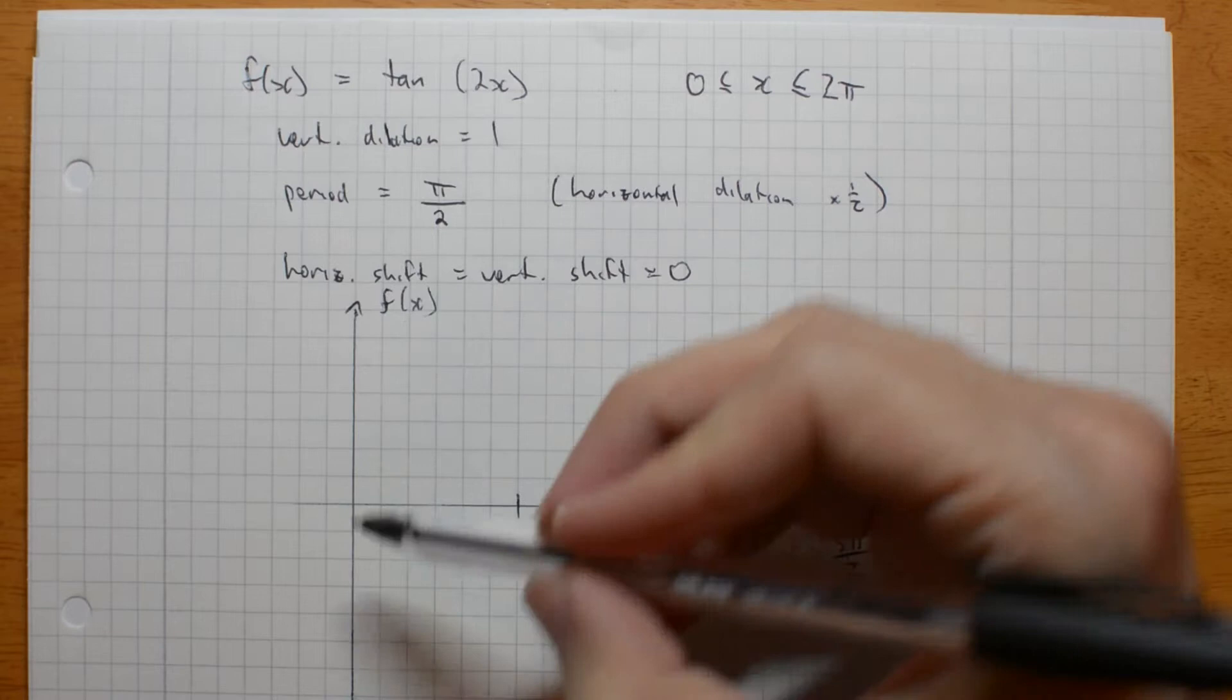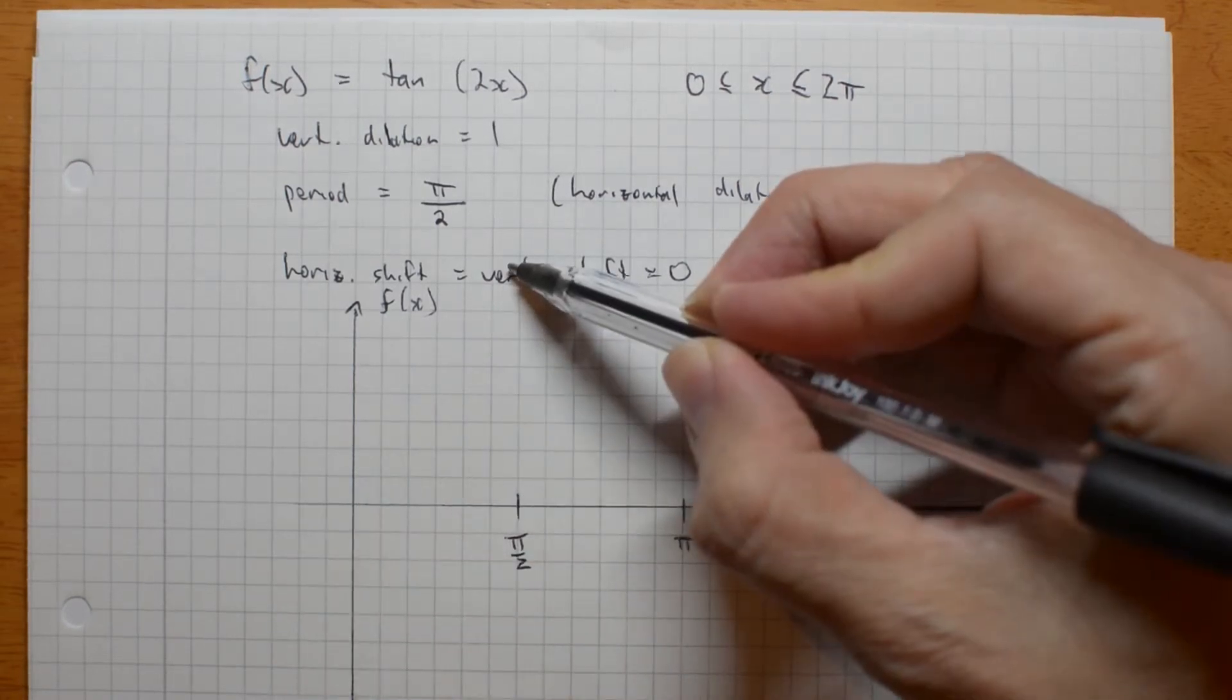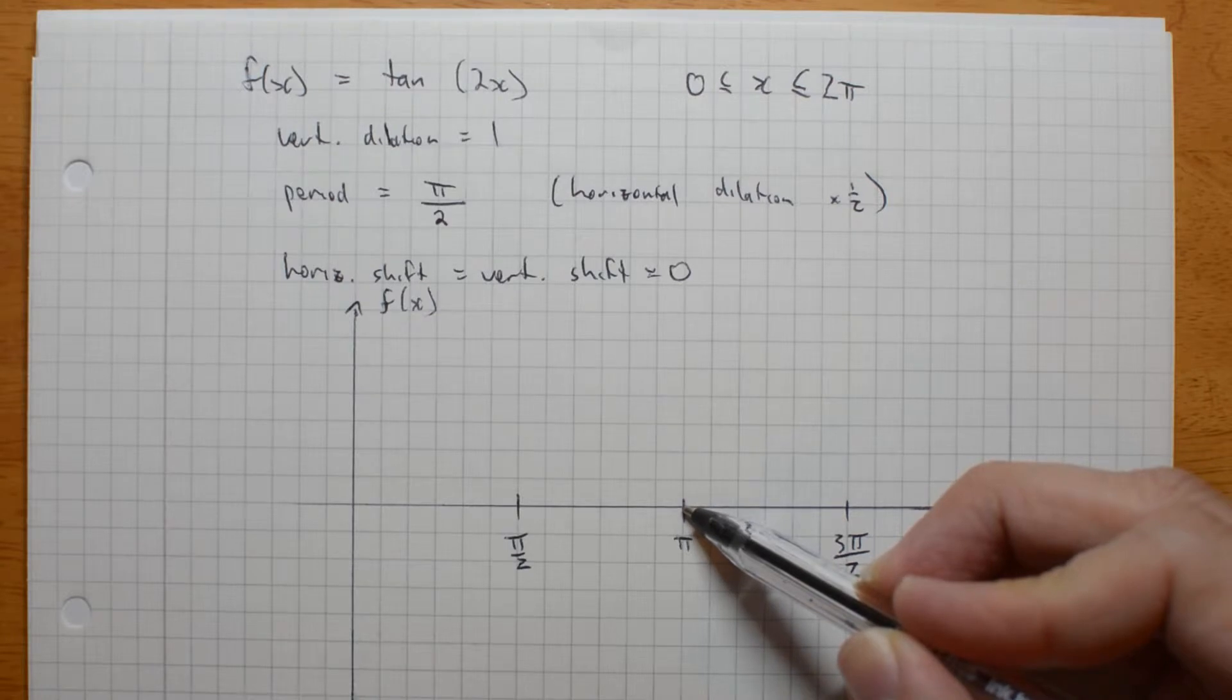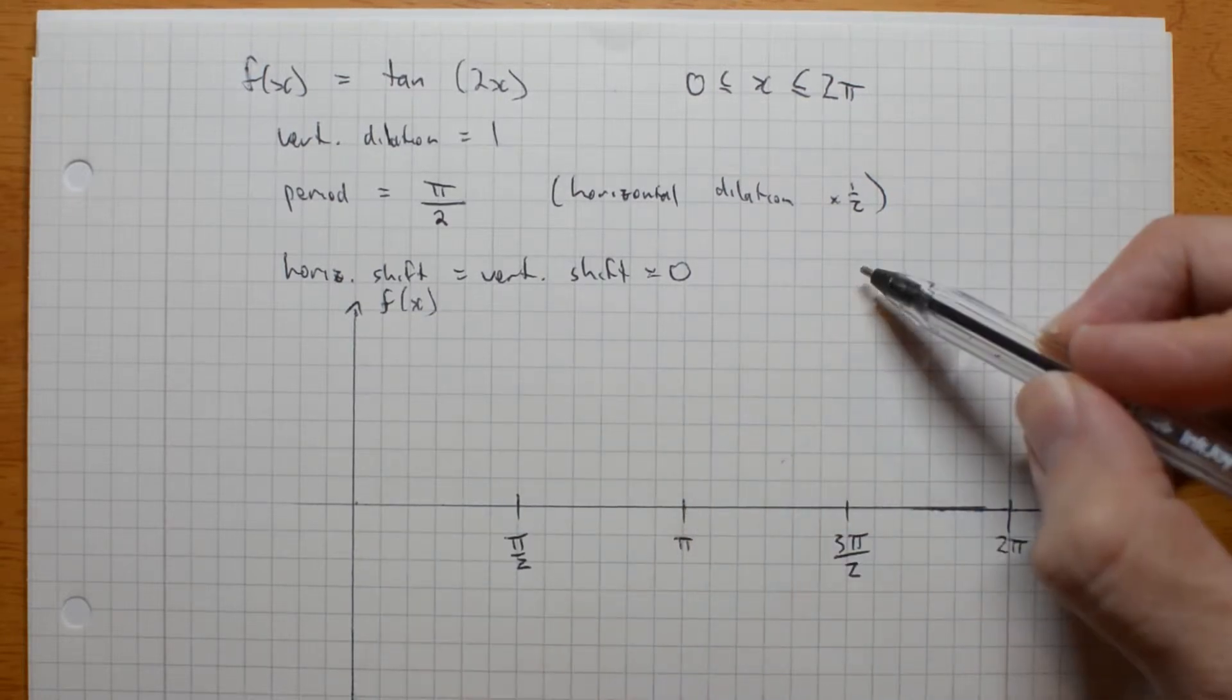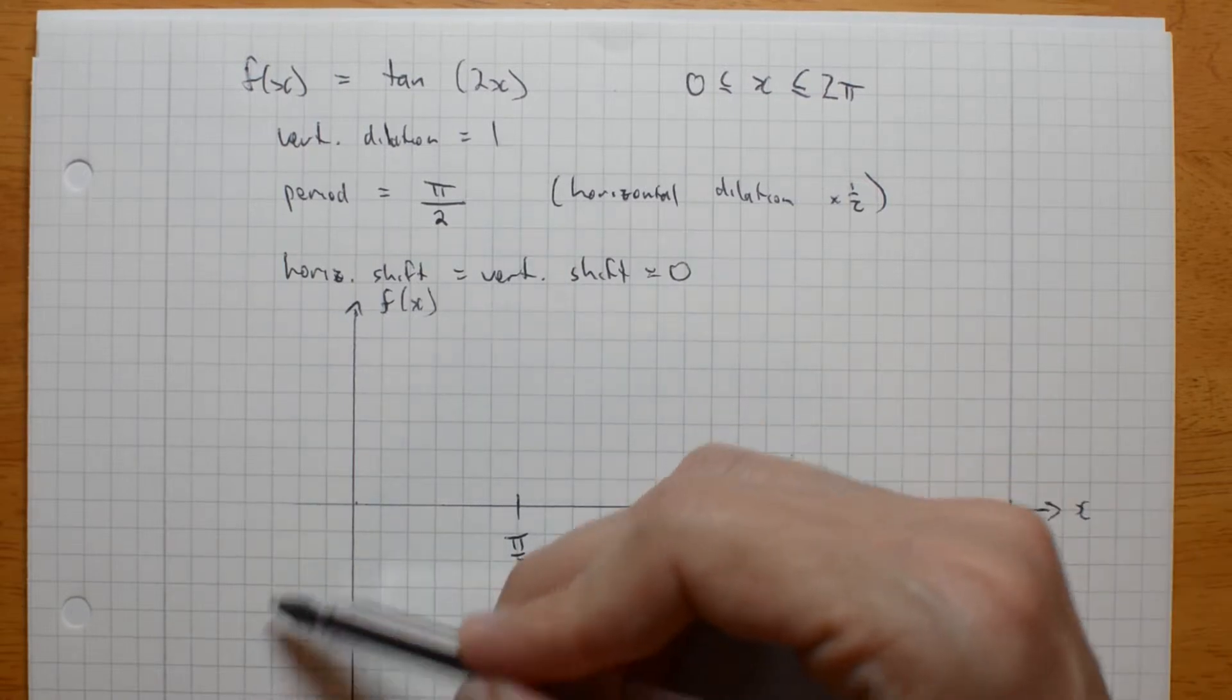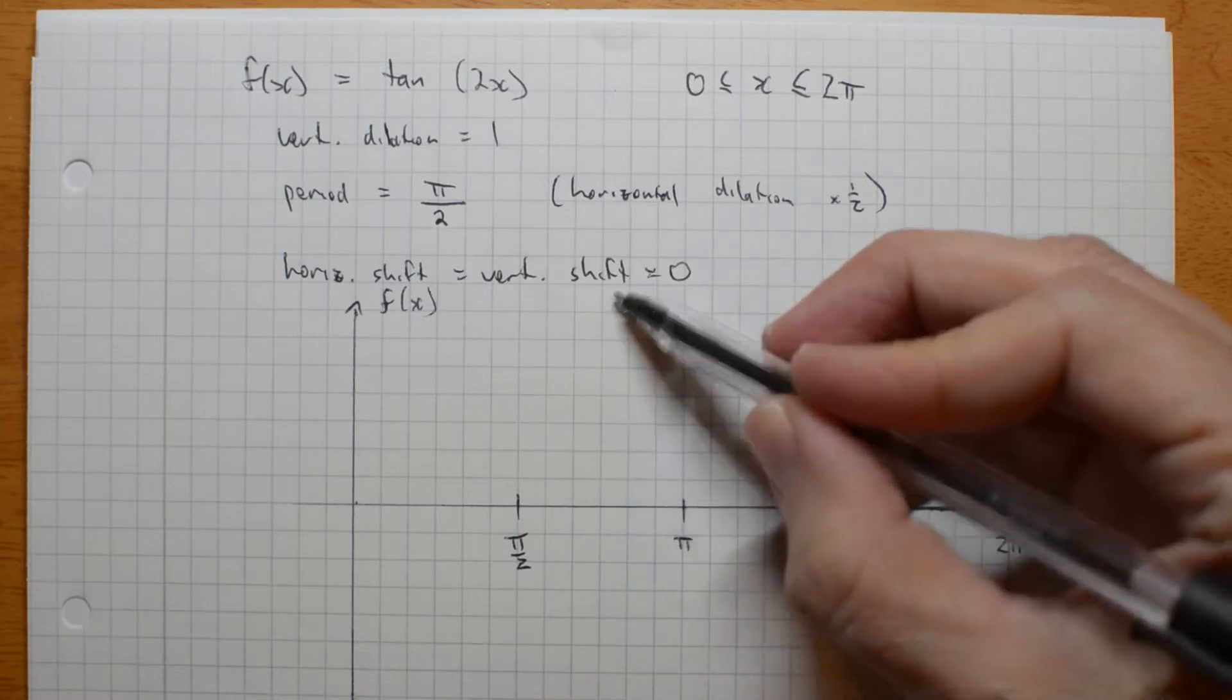The normal tan graph comes up to 0 and goes up to an asymptote at pi on 2. Starts down the bottom, goes 3 pi. Tan of pi is 0, because it's the same as tan of 0. Then goes up to here. I've got horizontal dilation of a half. I've got a period of pi on 2. So, it's actually going to go up half there, and then come up here, and go up half.